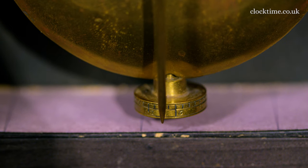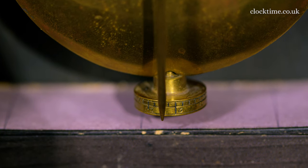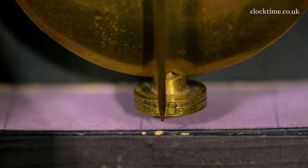The pendulum bob itself sits on a calibrated nut to give a micrometer adjustment, and you can see the figures engraved on the nut so you know exactly how far you're moving it.